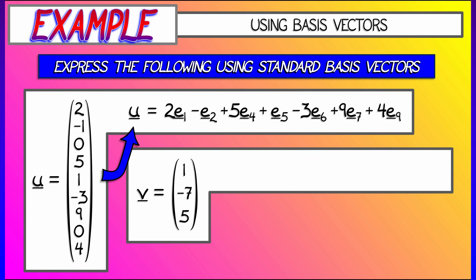Consider the vector v, which is 1, negative 7, 5. That can be written as i minus 7j plus 5k. Or if we want, we could use e1 and e2 and e3 with the same coefficients.